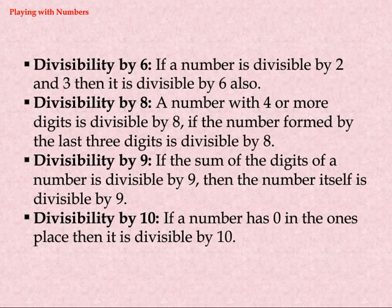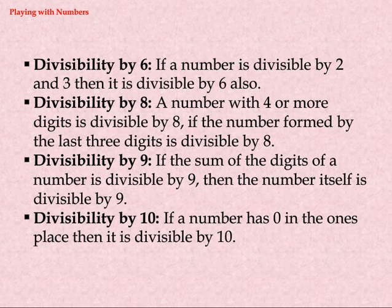Divisibility by 6: if a number is divisible by both 2 and 3, then it is divisible by 6 also. Divisibility by 8: a number with 4 or more digits is divisible by 8 if the number formed by the last three digits is divisible by 8. Divisibility by 9: if the sum of the digits of a number is divisible by 9, then the number itself is divisible by 9. Divisibility by 10: if a number has 0 in the ones place, then it is divisible by 10.